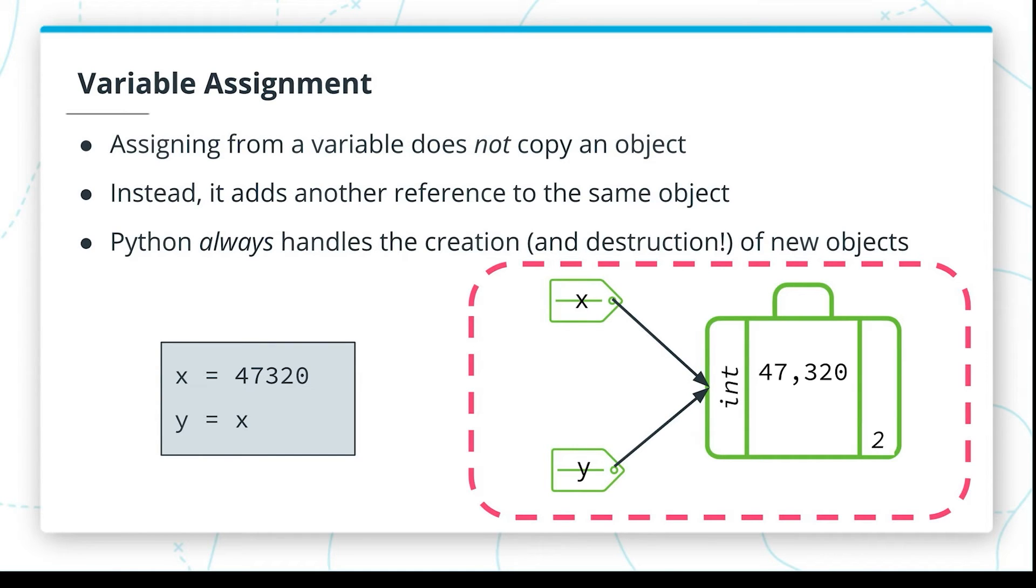Python always handles the creation and destruction of new objects for you. So when we're doing manipulation with variables, we're usually just changing what everything is referencing. We're rarely creating or destroying Python objects ourself. So with all this in mind, let's take a look at variables in the interactive interpreter to get a concrete understanding of these principles.